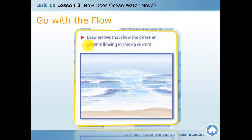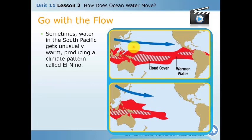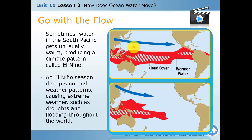Now draw arrows to show the water flow in the rip current — it is on the same page. Sometimes the water in the Pacific Ocean gets additionally warm from the sun, and this produces a climate pattern called El Niño.